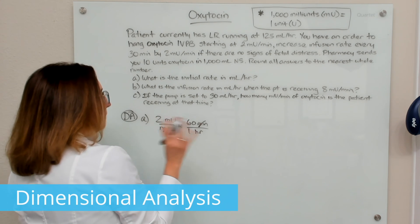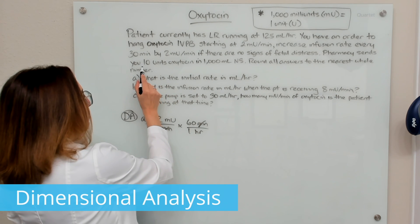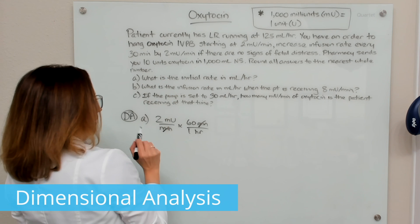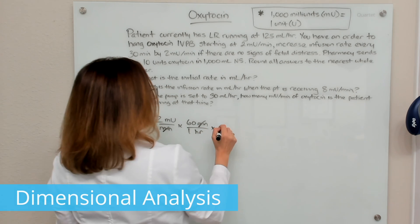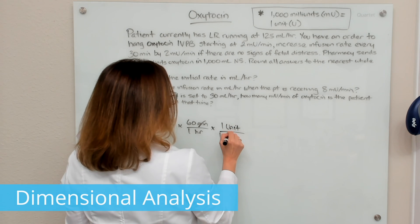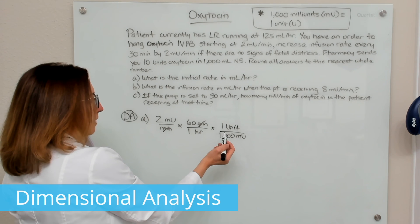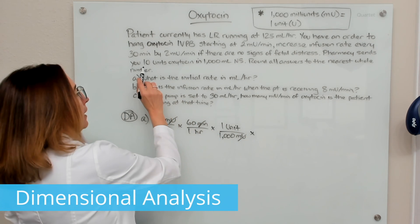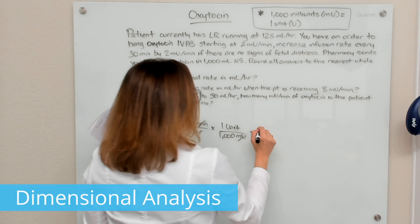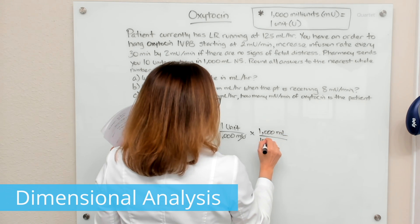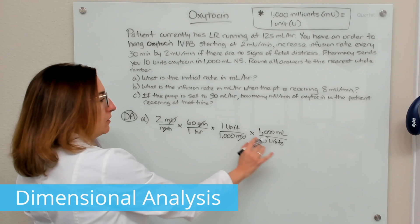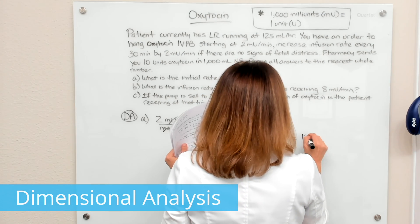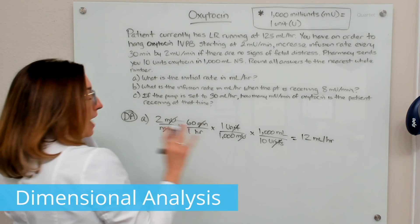Now I need to get to milliliters. I'll multiply by our available concentration — 10 units in 1,000 mL. But notice this is in units, not milli-units. So my next step is to multiply by the conversion factor: 1 unit equals 1,000 milli-units, placing units on top and milli-units on bottom so they cross off. Now I'm ready to multiply by our available concentration: 1,000 mL over 10 units, with units on bottom so they cross off. When I multiply this out, I'm left with milliliters per hour — which equals 12 mL per hour. That's the answer to A.